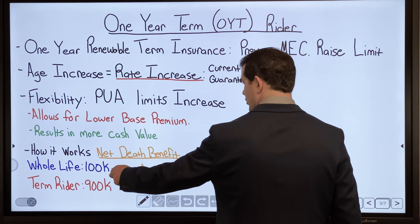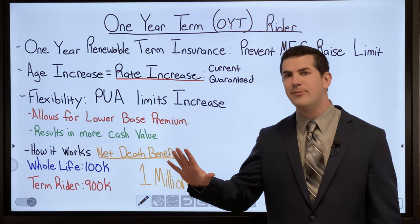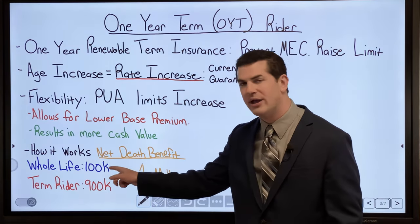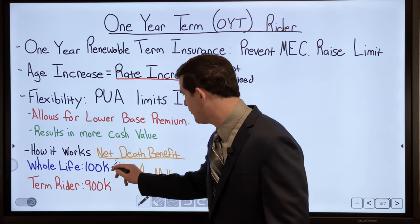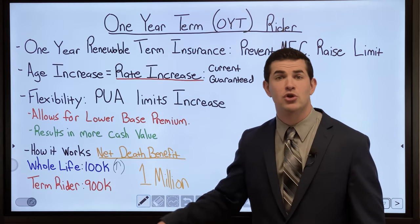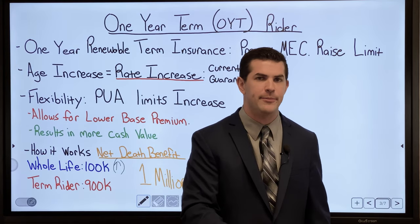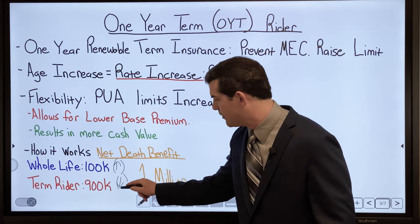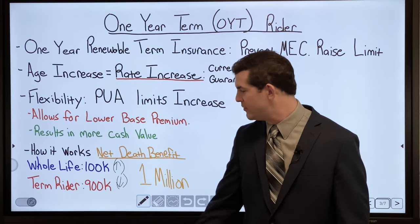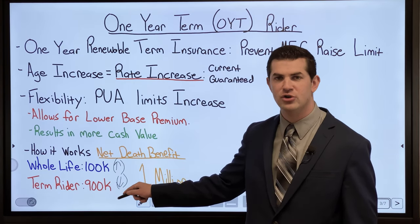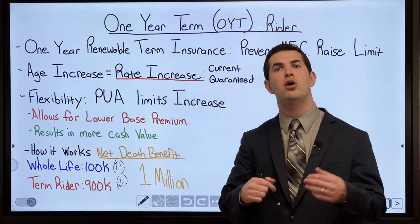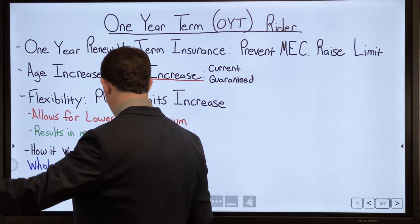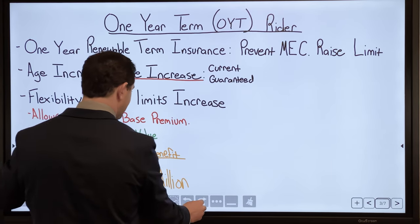With a net death benefit of one million dollars — say a whole life death benefit of $100k and a term insurance rider of $900k — when you add money into PUAs, it grows your cash value, but it also grows your whole life death benefit. Adding money into the PUA component buys paid-up additional whole life insurance — it's permanent, it's paid up. As the whole life death benefit goes up, the term rider goes down. Yes, the rate may increase, but it increases on a lower amount of term insurance — so the net cost on the term component will often go down.